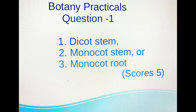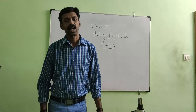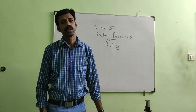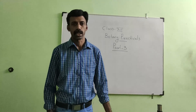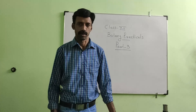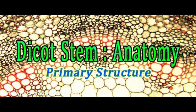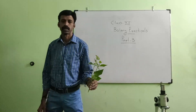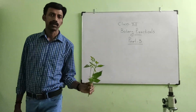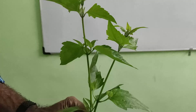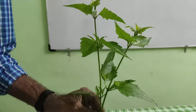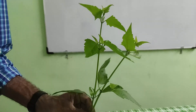The choices are: Dicot Stem, Monocot Stem, or Monocot Root. I will show you how to do it. So here is Botany Practical Part III. Now, what we will do is the Dicot Stem.